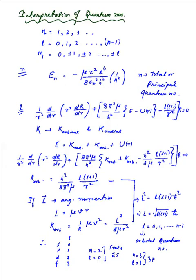Hello. In our previous video on the quantum mechanics of the hydrogen atom, we had obtained the three quantum numbers which had come in a natural way during the search of acceptable solutions to the Schrödinger equation, and they can be tabulated as follows.